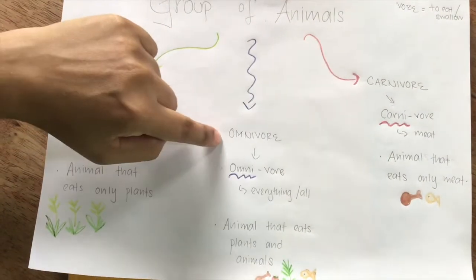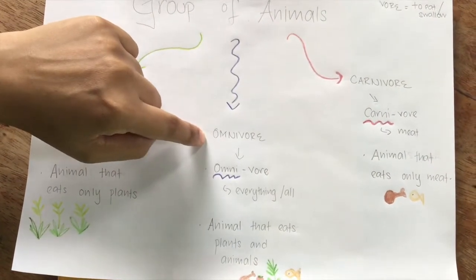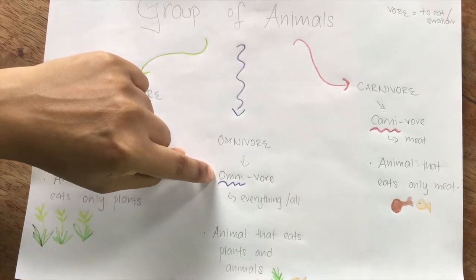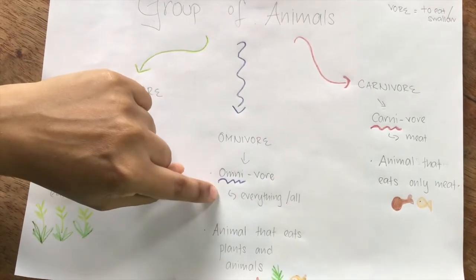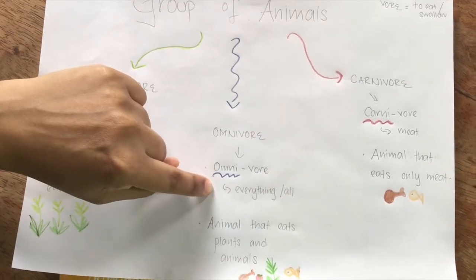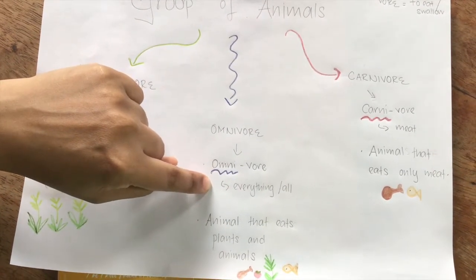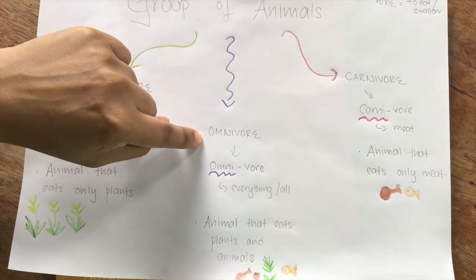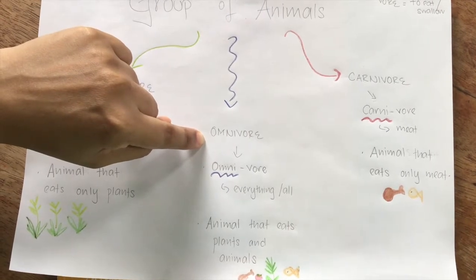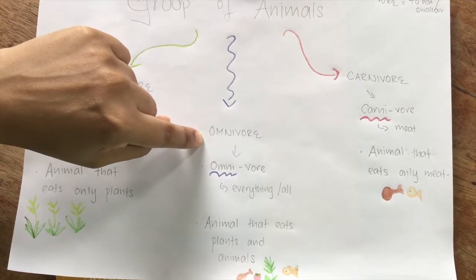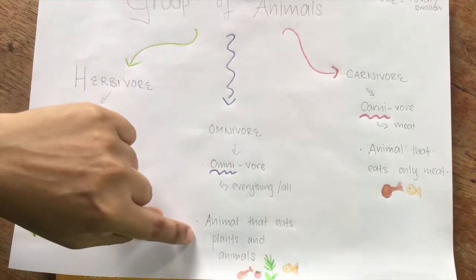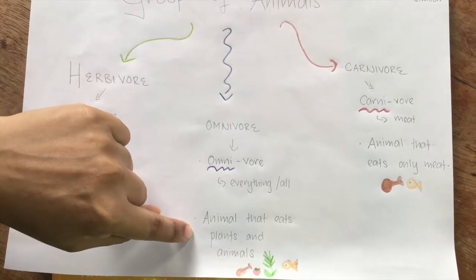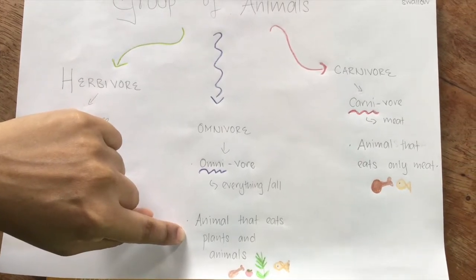Omnivore. 'Omni' means everything or all. Omnivore is used to describe animals that eat plants and other animals.